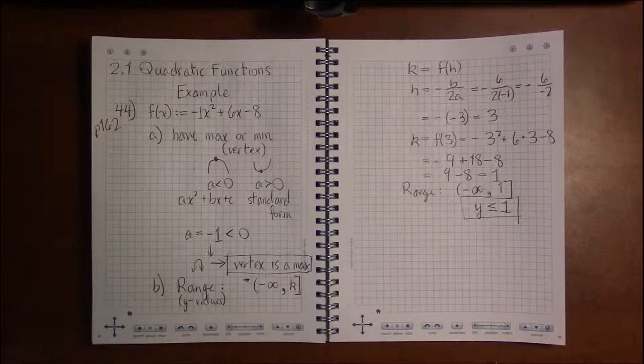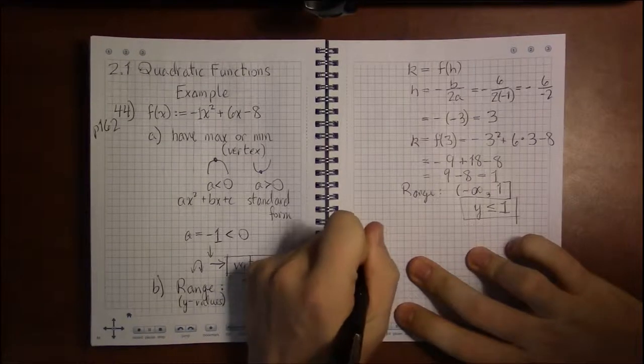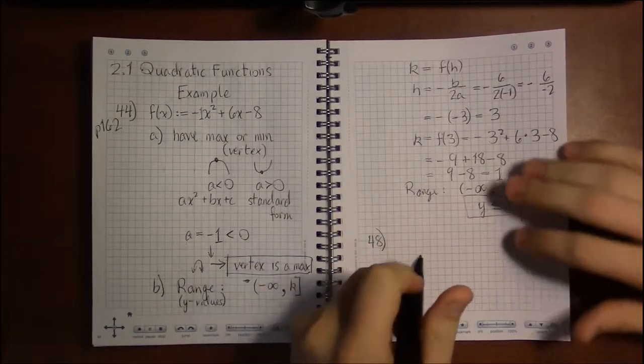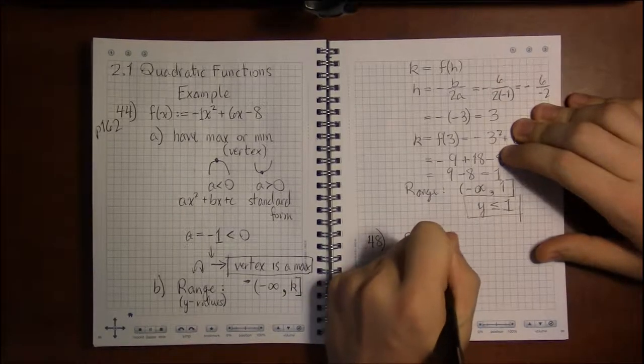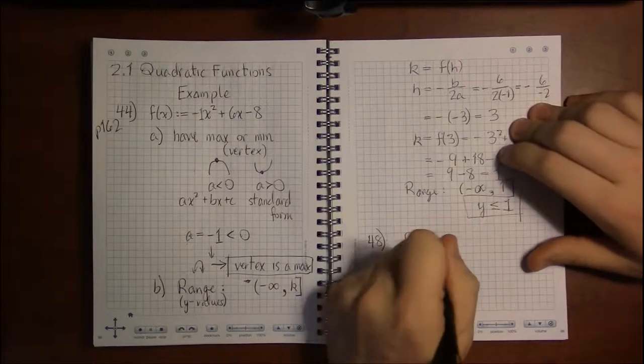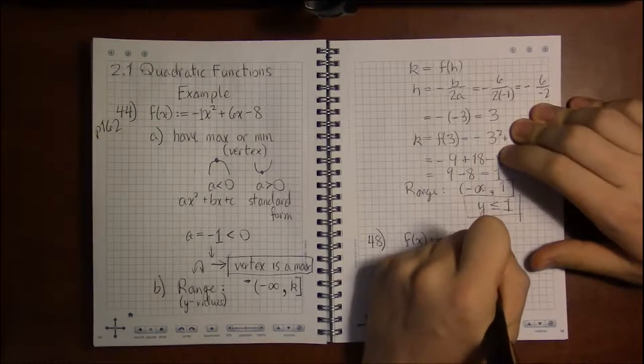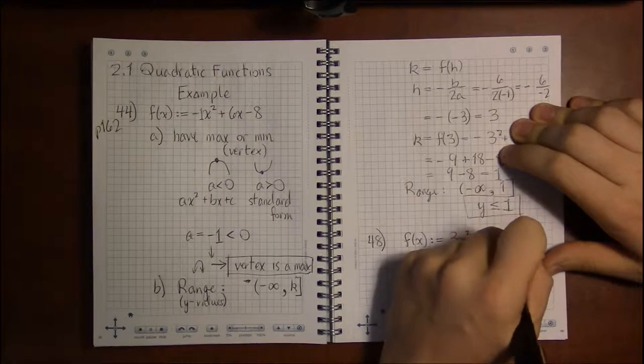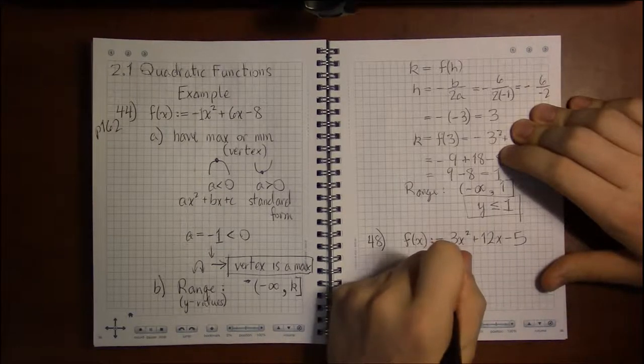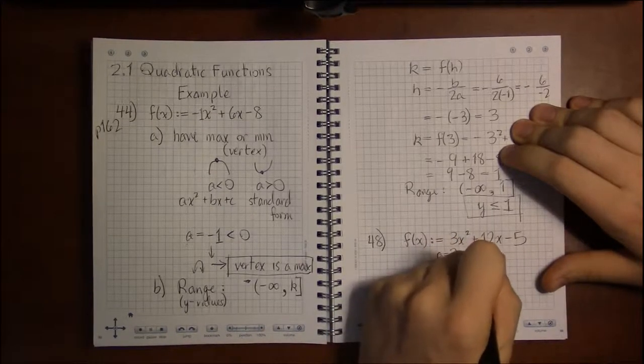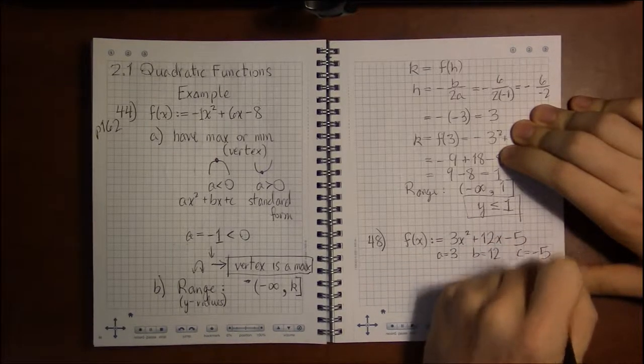That was thankfully short enough that we might be able to fit in another one. On problem 48 we're looking at 3x squared plus 12x minus 5. Here it's pretty clear a is 3, b is 12, and c is minus 5.